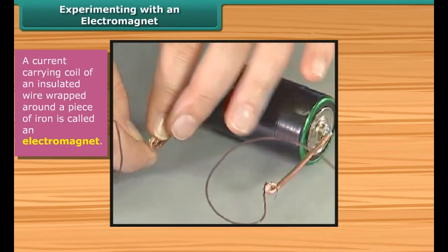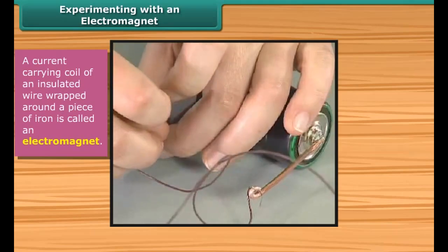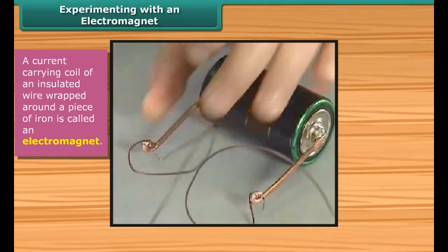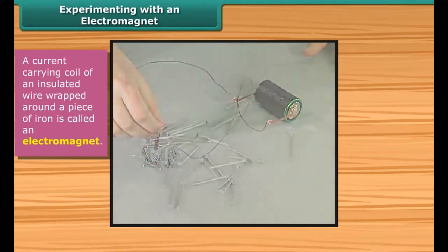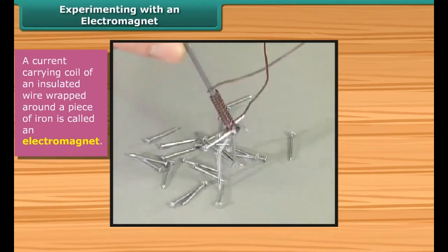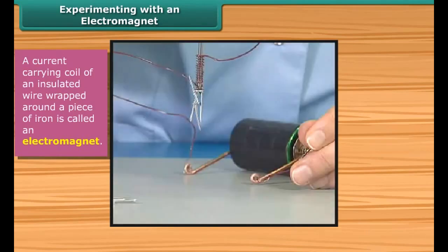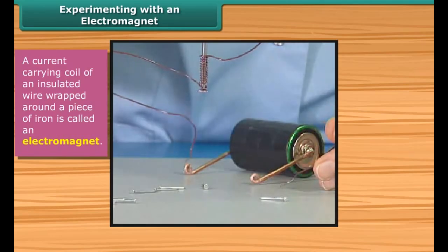When the current is switched off, the pins are no longer attracted to the nail. The coil behaves like a magnet when electric current flows through it, and generally loses its magnetism when the current is switched off. Such coils are called electromagnets. An electromagnet works on the magnetic effect of electric current.